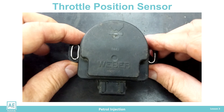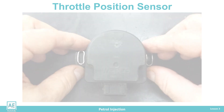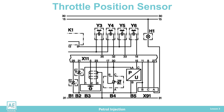The most common failure of the sensor is damage to the resistive track of the potentiometer due to wear and tear during long use. When the slider is in that worn part, the output signal is lost. The ECU does not receive information about the position of the throttle, recognizes the fault, and stores the error.